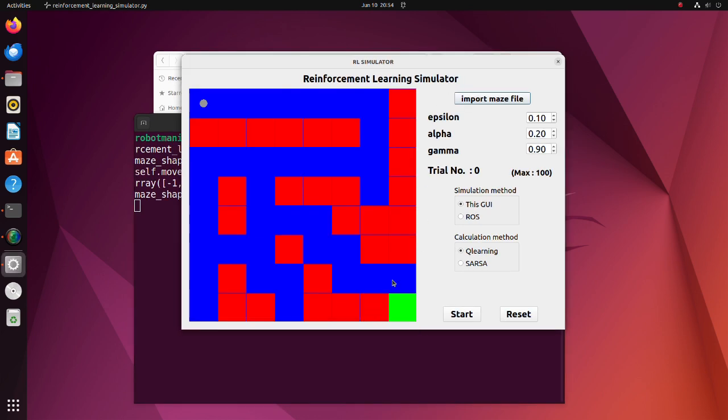The green cell is the goal. Reward for reaching the goal is set to 3. Red cells denote walls. Bumping into the walls is accompanied by a negative reward of minus 2. Blue cells form pathways. Rewards for blue cells are set to 0.